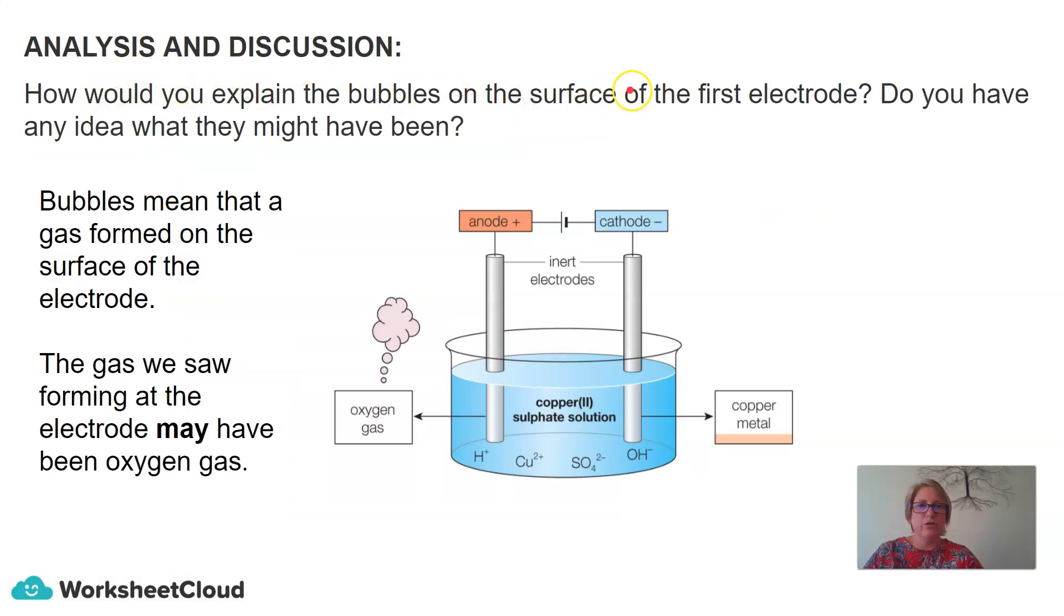How would you explain the bubbles on the surface of the first electrode? Do you have an idea of what they might have been? So the one thing is that bubbles mean that a gas is being formed on the surface of the electrode. So we can guess by the chemicals that it may have been oxygen, but we would have had to collect the gas and carry out the appropriate procedure to test that gas.